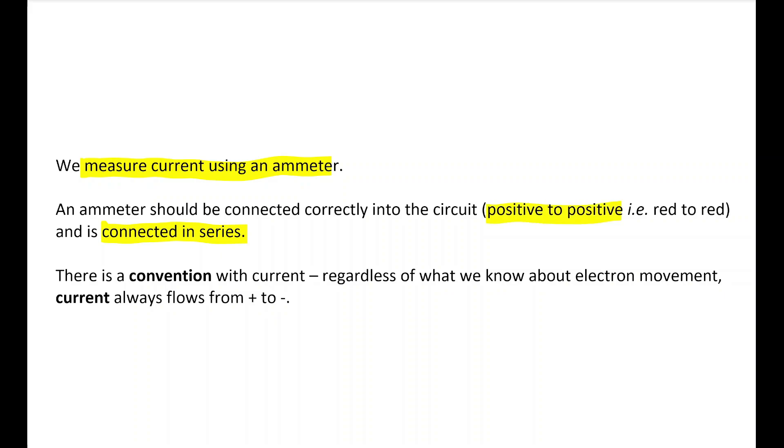Usually, with certain ammeters anyway, you have to make sure that it's connected in the right way round. So the positive, the red port on the ammeter, is connected to the red port on your power supply, or the positive of your battery. Usually, nowadays, that doesn't matter. You won't blow the ammeter by doing that, but you will get a negative number, which you can just ignore. But you do need to be aware that if you get a negative number, it means that your ammeter is connected in the wrong way round.